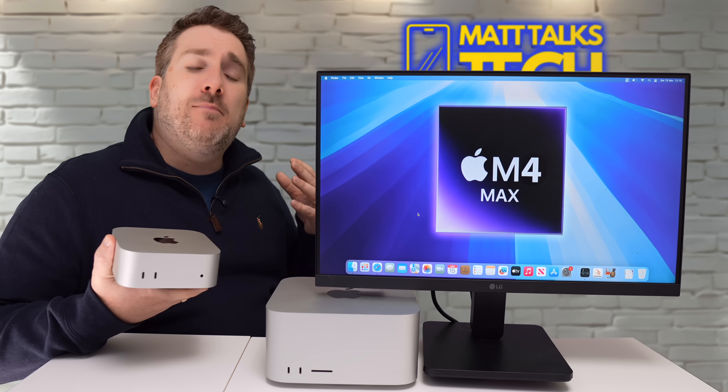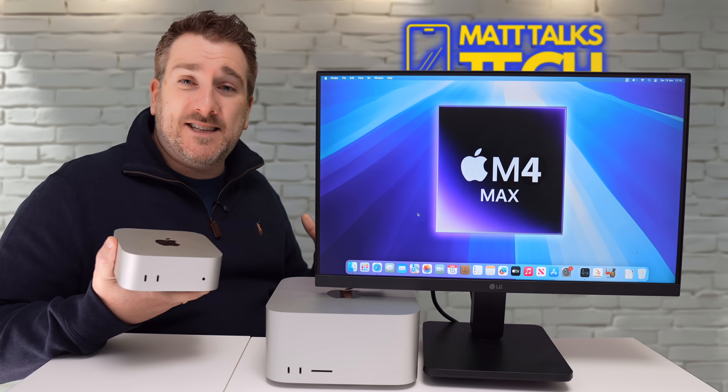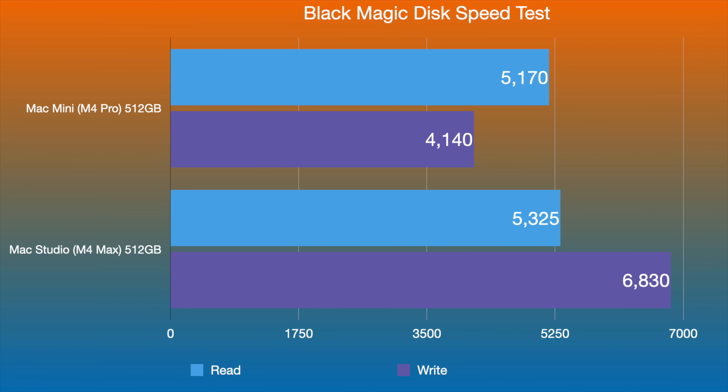The first test is the Blackmagic disk speed test. The Mac Mini M4 Pro — the baseline version — got read speeds of 5,170 MB/s and write speeds of 4,140 MB/s. The Mac Studio M4 Max, with the same amount of storage, has a slightly faster read speed and a significantly faster write speed at 6,830 MB/s.